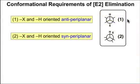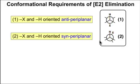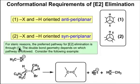These Newman projections show the two conformations that meet the alignment requirements of E2 elimination. Case number one — the one we looked at in the previous movie — is known as the anti-periplanar conformation. Notice that it's a staggered conformation and is the most favorable. The syn-periplanar conformation, in which both C-X bonds head in the same direction, is an eclipsed conformation. Although it meets the requirements for continuous orbital overlap, it's much less favorable on steric grounds. So generally, E2 elimination reactions will go through the anti-periplanar conformation.